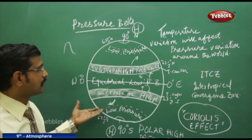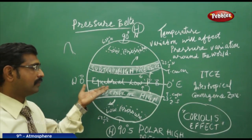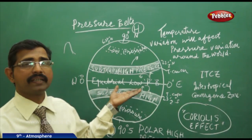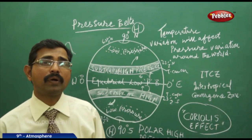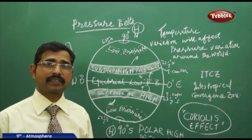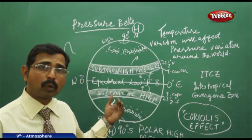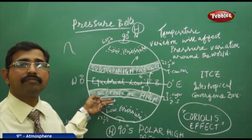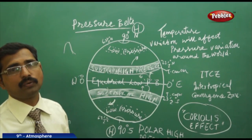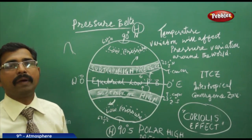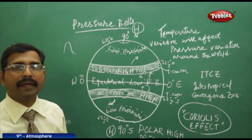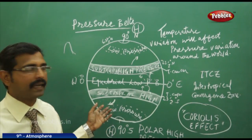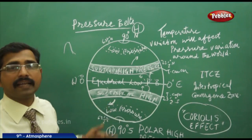At tropical regions you have less rainfall, while subtropical regions have more rainfall. These kinds of patterns are mainly because of winds and wind direction.